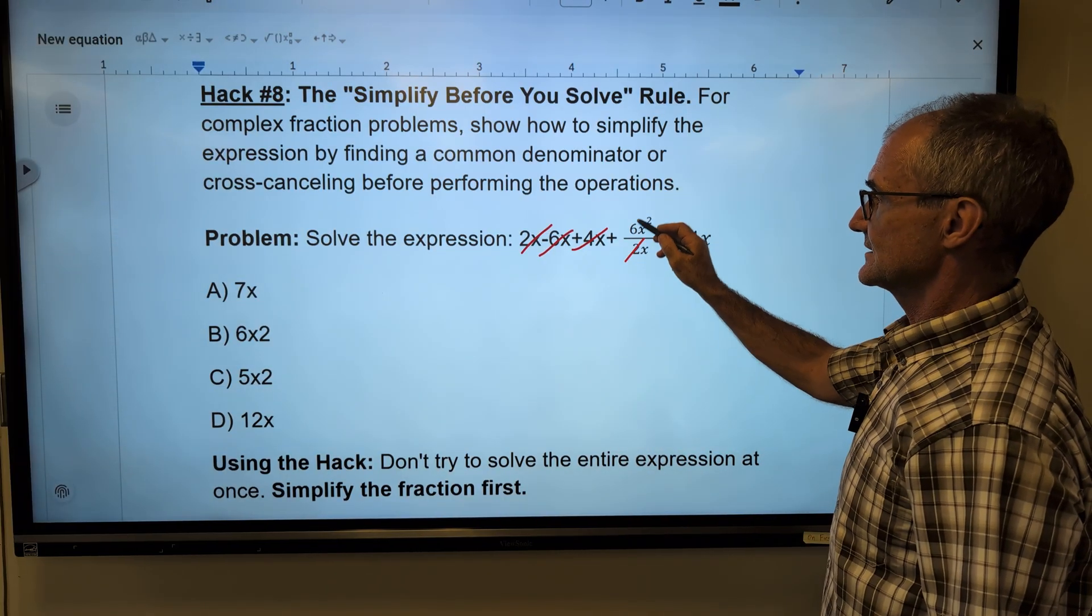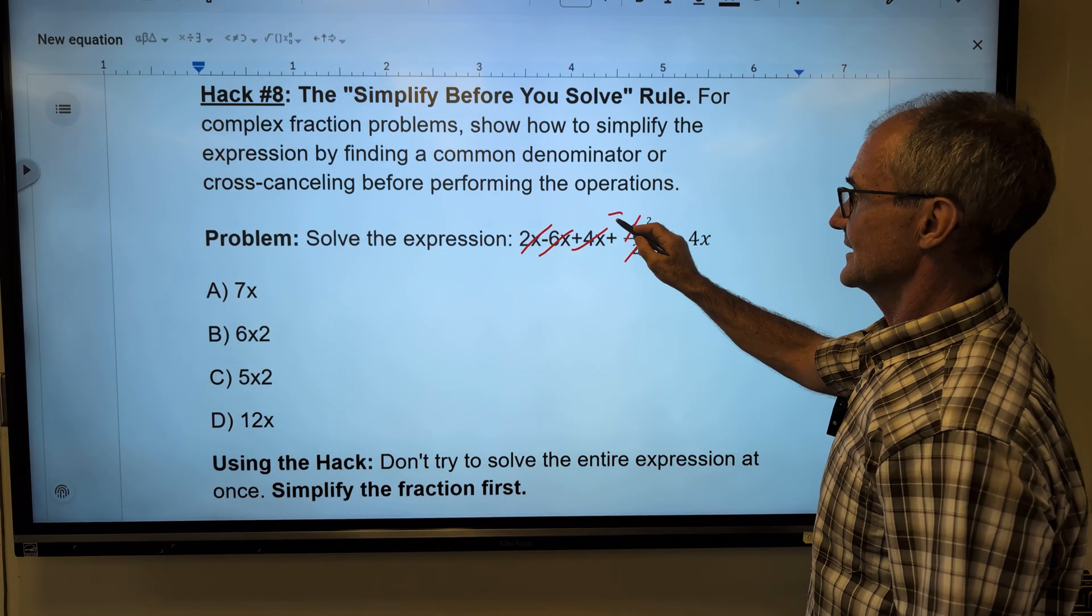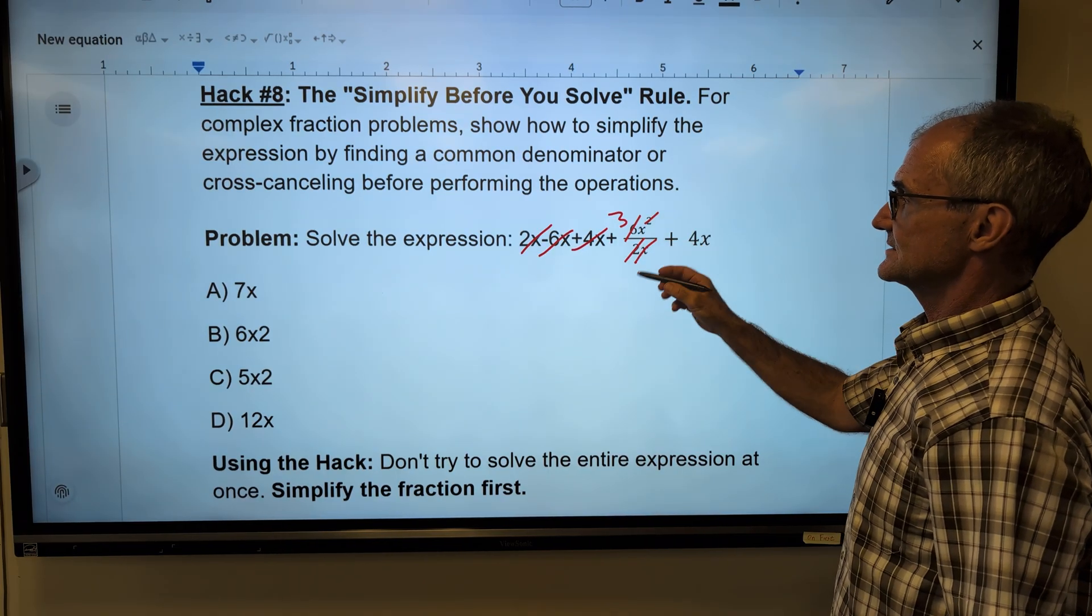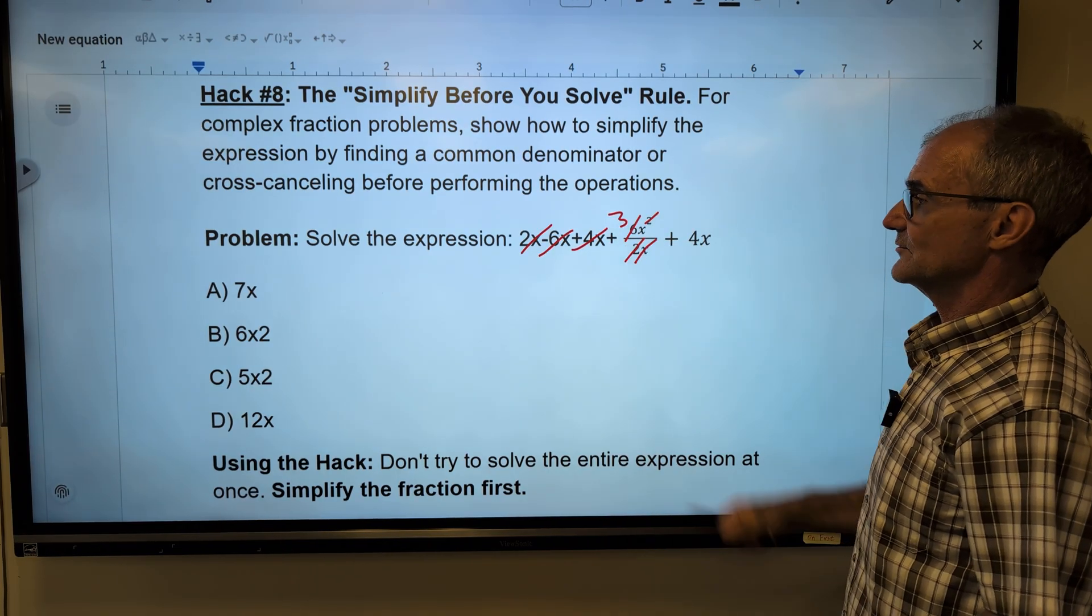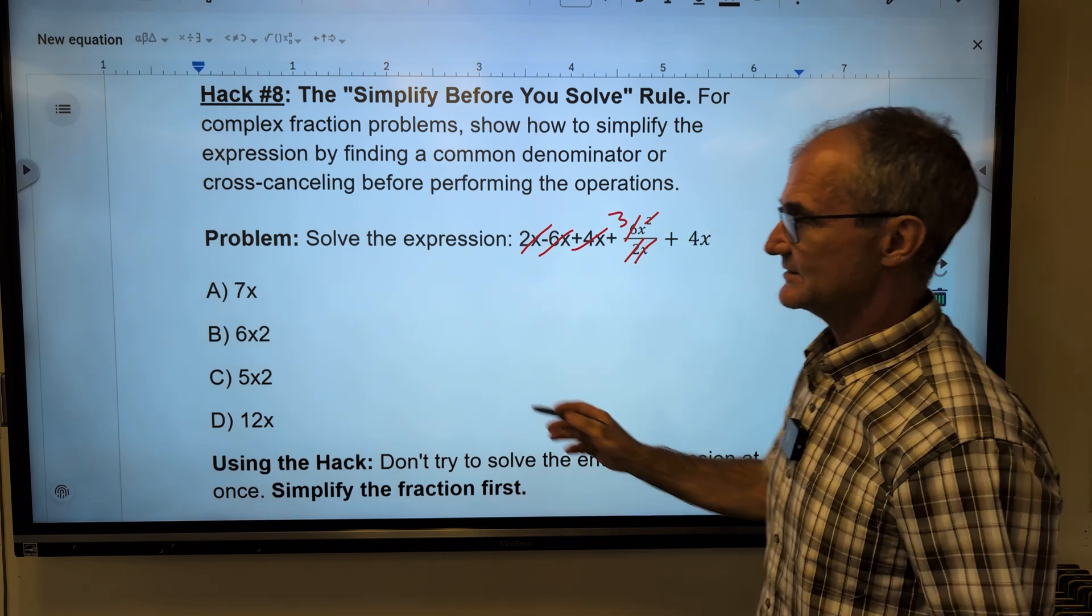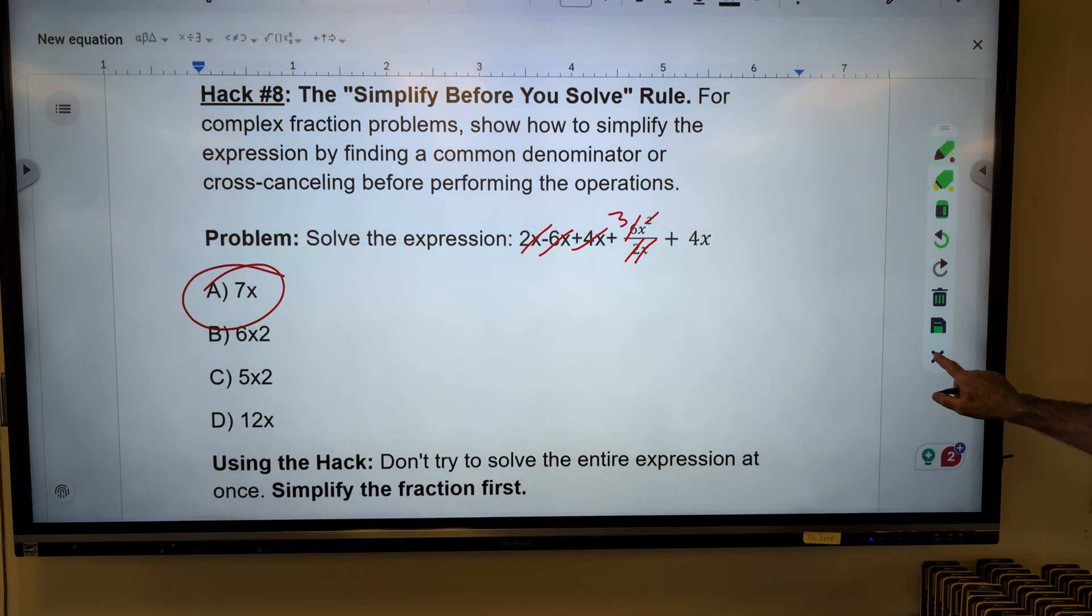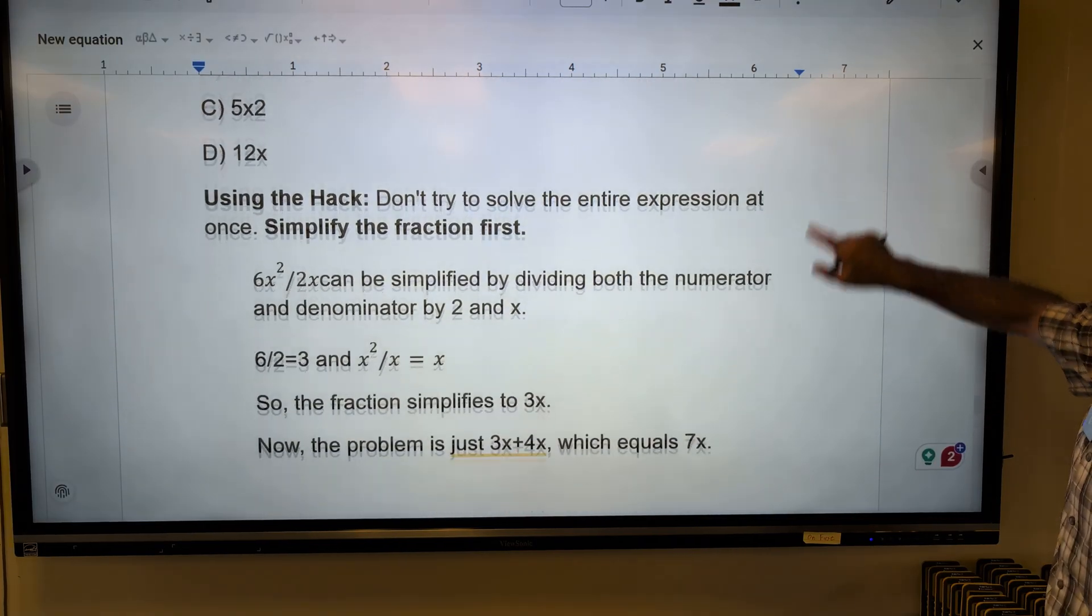Two goes into here once, into here three times. X goes into here once, into here once, leaving me as three-x plus four-x, or a total of seven-x. Correct answer, answer A right there. All right, just a couple more to go here.